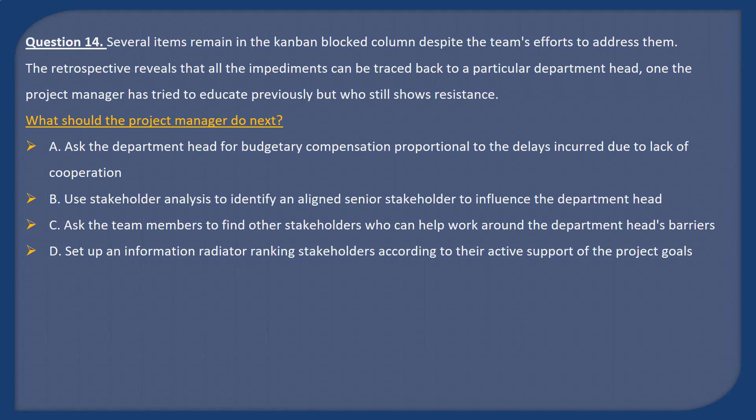Question 14. Several items remain in the Kanban blocked column despite the team's efforts to address them. The retrospective reveals that all the impediments can be traced back to a particular department head — one the project manager has tried to educate previously but who still shows resistance. What should the project manager do next? A: Ask the department head for budgetary compensation proportional to delays incurred due to lack of cooperation. B: Use stakeholder mapping to identify an aligned senior stakeholder to influence the department head. C: Ask the team members to find other stakeholders who can help work around the department head's barriers. D: Set up an information radiator ranking stakeholders according to their active support of the project goals.